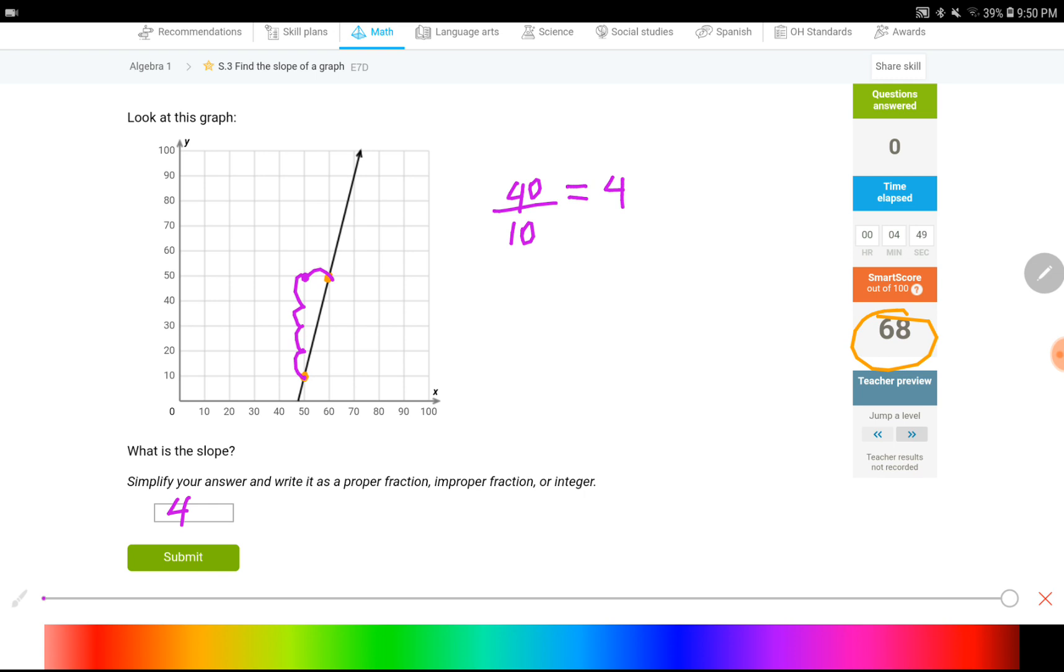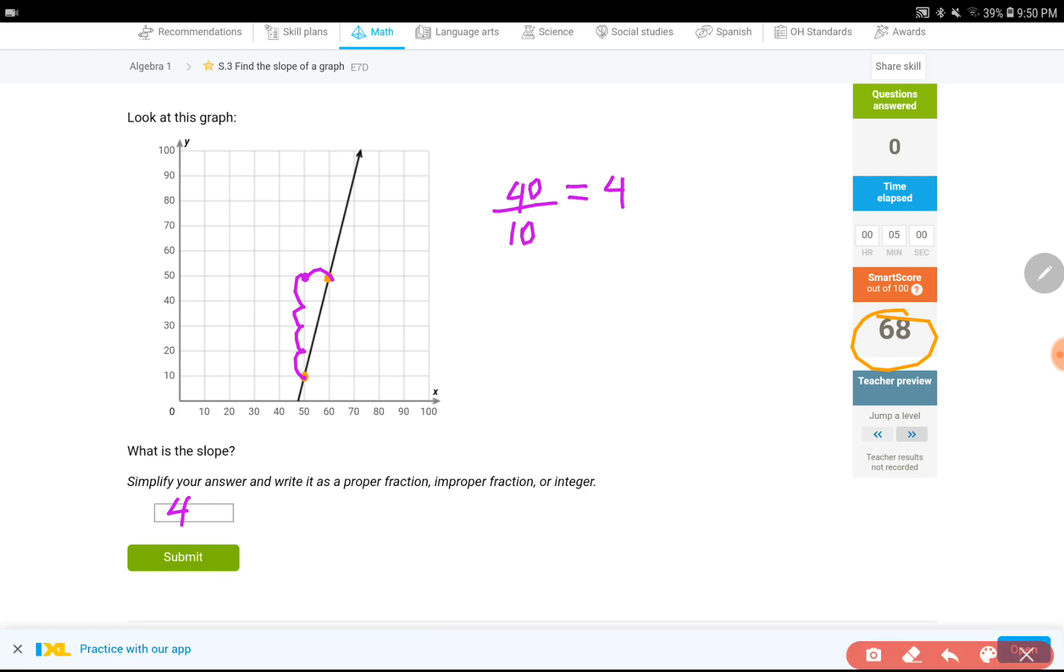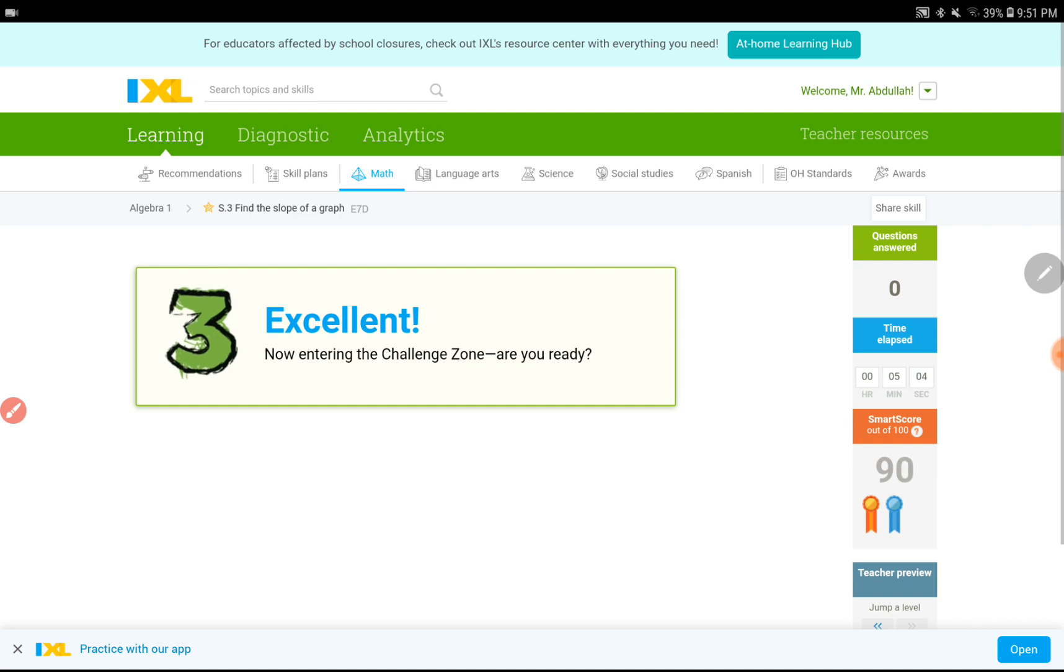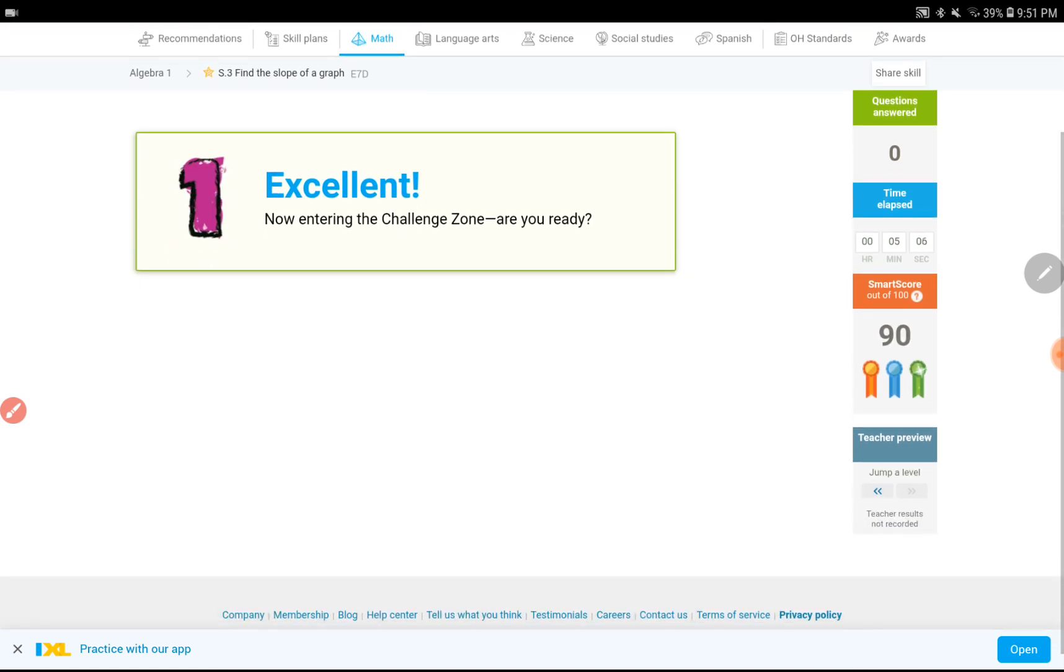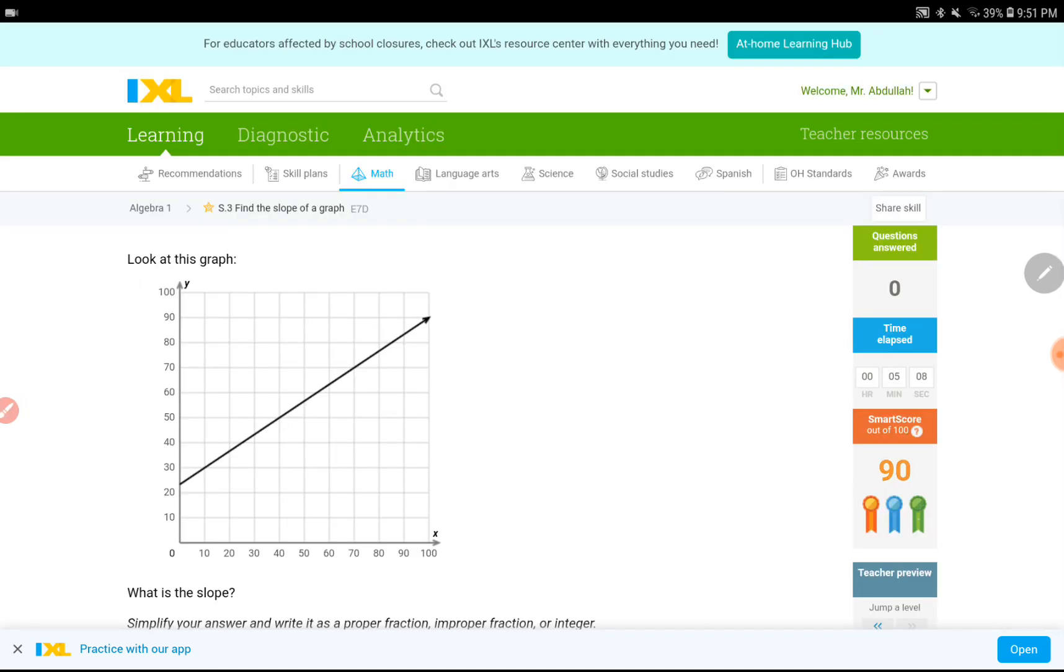I would not suggest putting 4 over 1 over here. You may not get any points for that one as well. Just put a 4. Okay, let's see what happens if we skip another level. If that question is different, I will do that one too.